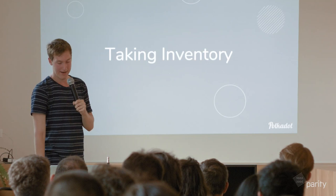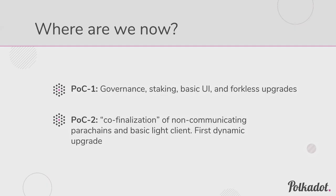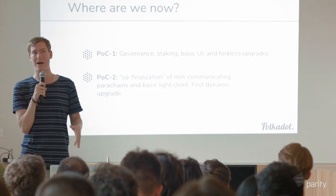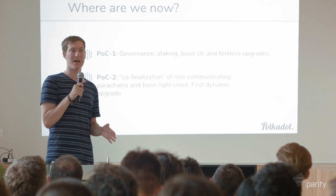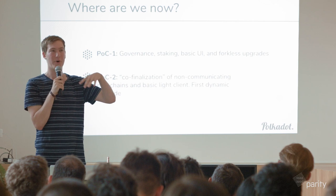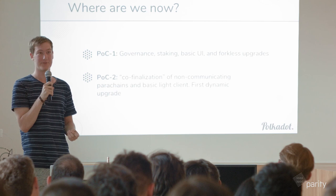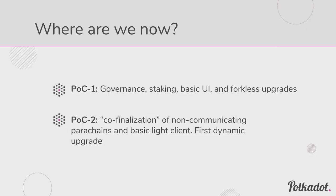Taking inventory of what we've done and what's next: we've released two proof-of-concepts. POC1 had on-chain governance — a voting system, bicameral government with proof-of-stake, a basic user interface, and forkless upgrades. POC2, which we launched yesterday, has initial co-finalization of parachains — the message queues are coming in later proof-of-concepts — and a basic light client. Forkless upgrades are the idea that we can change the entire logic of the chain without restarting it. We actually did that yesterday when we launched POC2, in what we think was the first time ever.